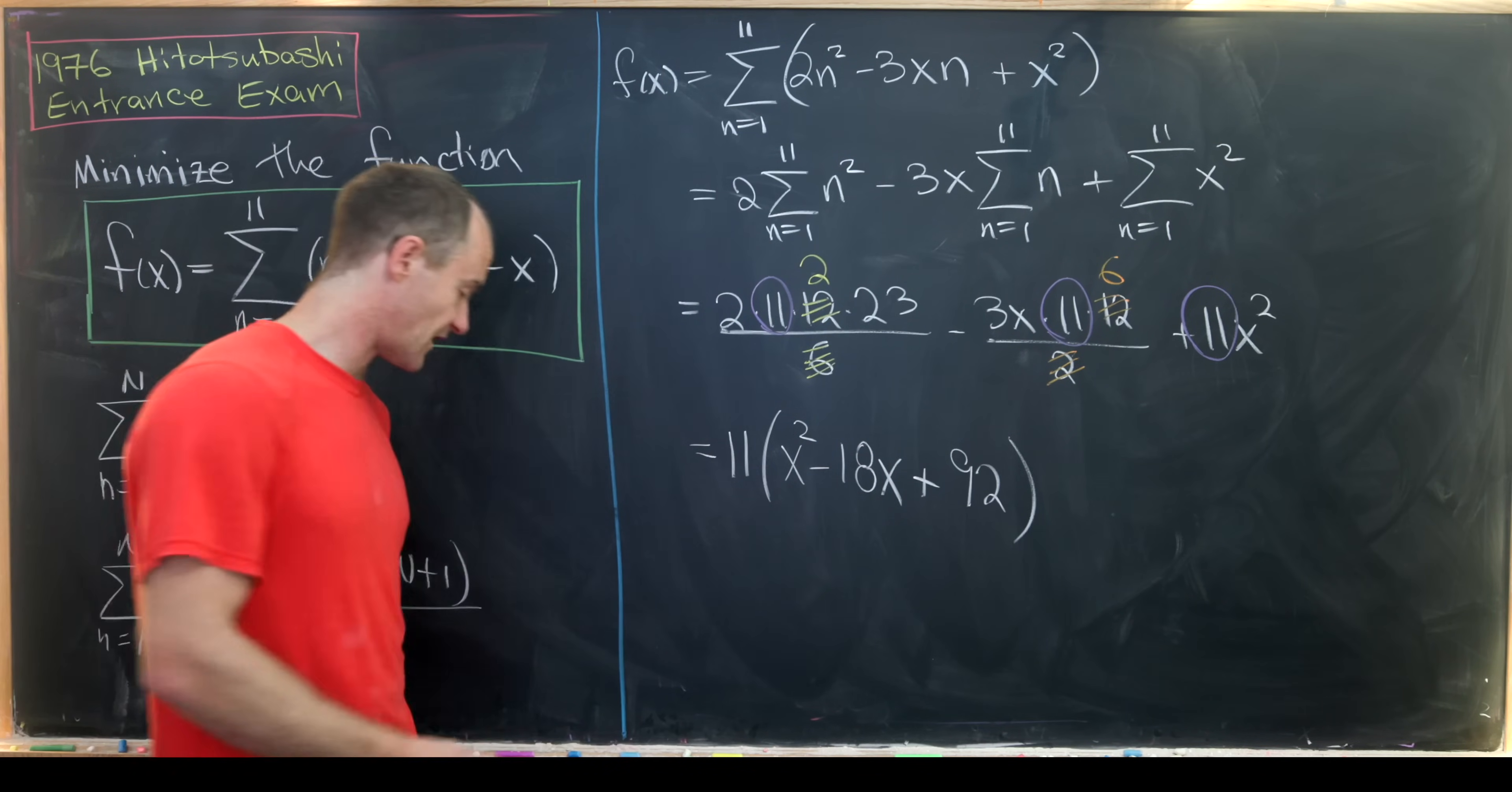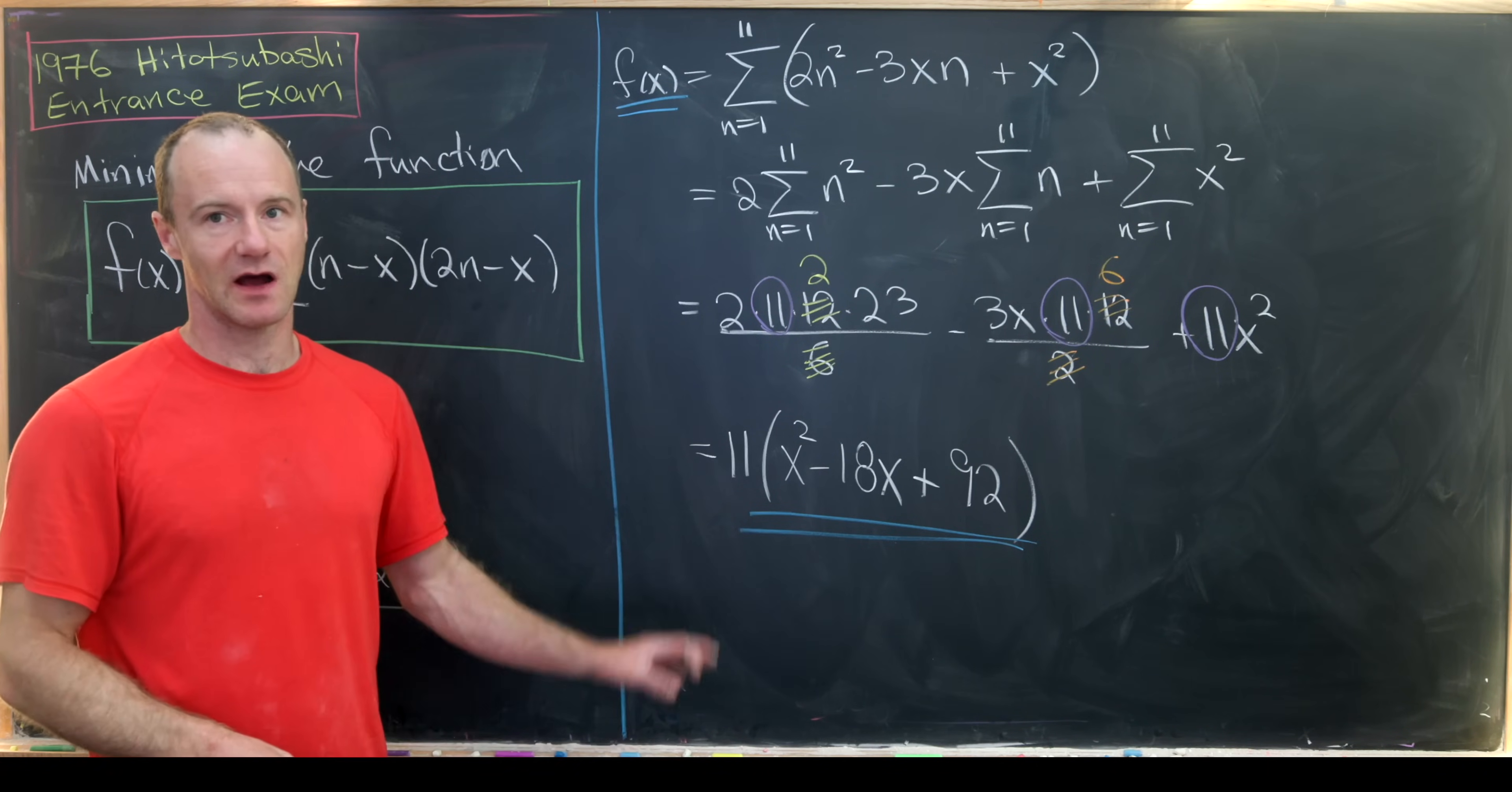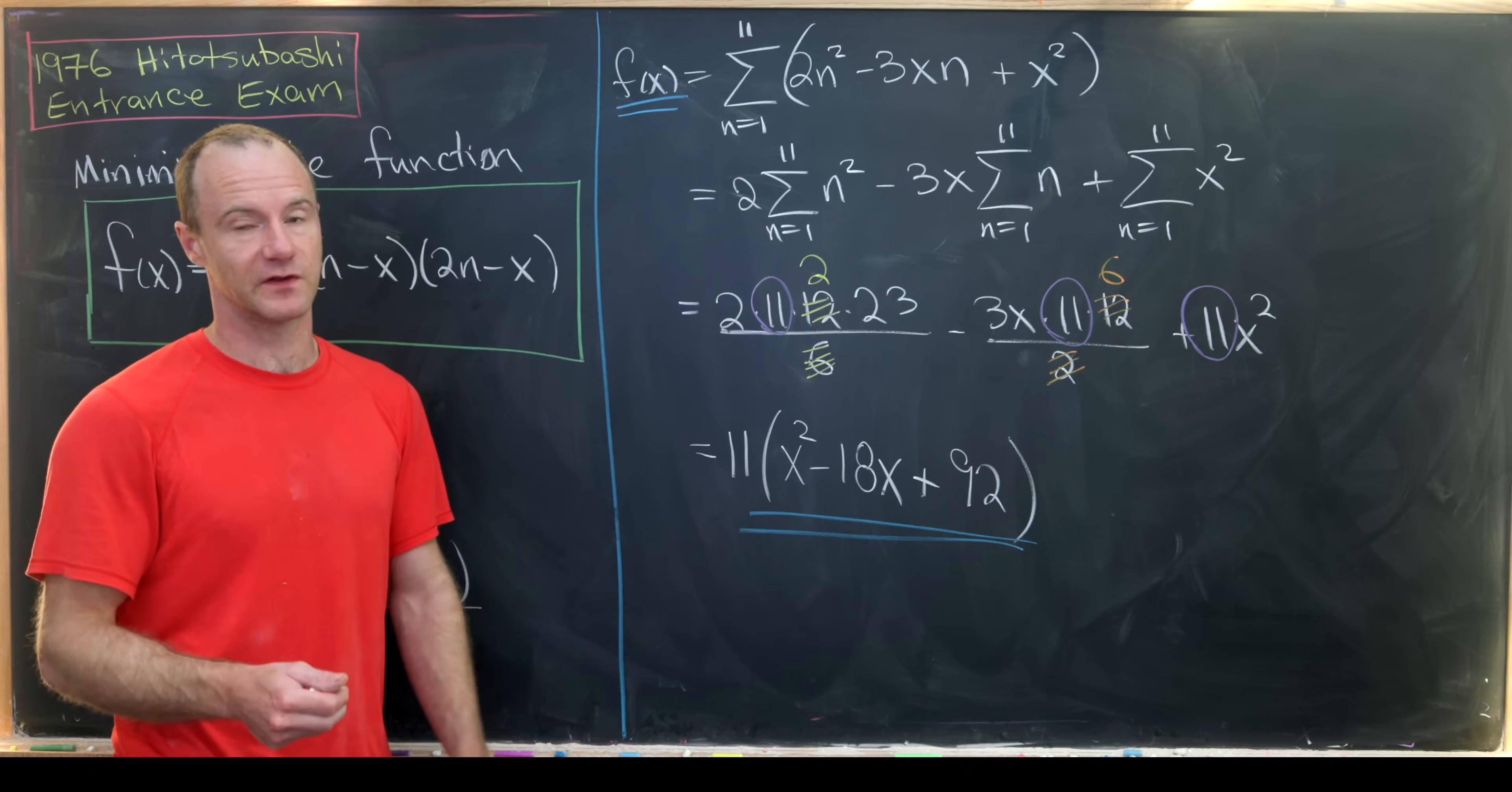Okay, so now we want to find the minimum value of this quadratic polynomial. But this is obviously an upward facing parabola because the coefficient of x² is positive. So if we can find the vertex then we're done. And we can find the vertex a number of different ways.